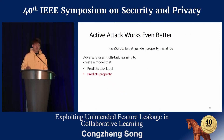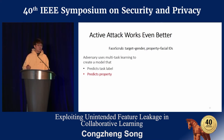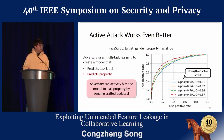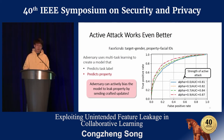Next, I'll show an active version of our attack that can work even better. In the active attack, the adversary creates a model locally using multitask learning — this model predicts both the task label and the property. The updates computed from this model actively influence the global model to leak the properties. We show the ROC curve for predicting facial IDs in the FaceScrub dataset, where alpha is the strength of the active attack — at alpha equal to 0 there is no active attack. For larger alpha values, we get better AUC scores, demonstrating that the adversary can actively bias the global model to leak properties by sending crafted updates via multitask learning.